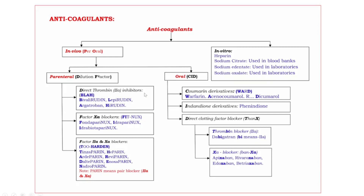Direct thrombin inhibitors — these are also known as factor 2A inhibitors. They end with the suffix '-rudin'.